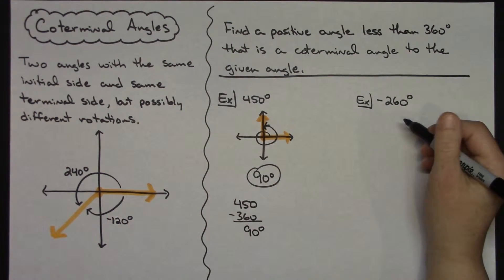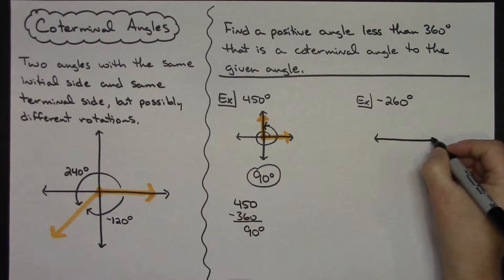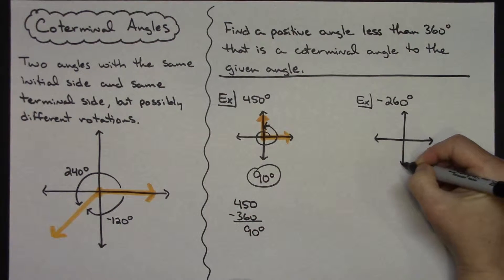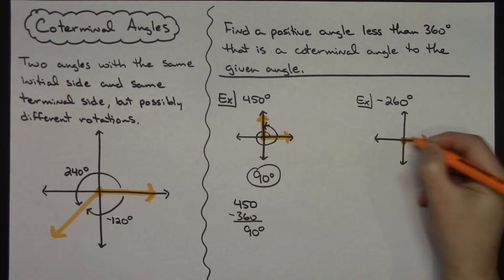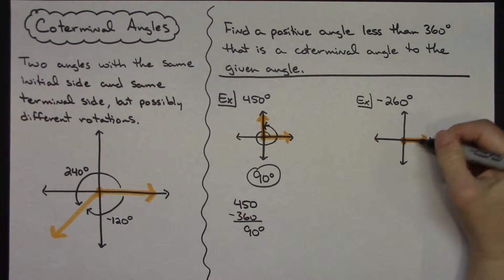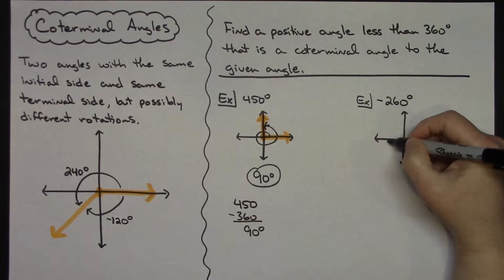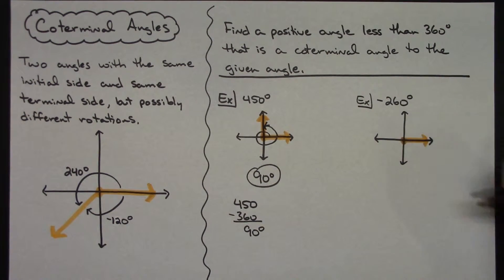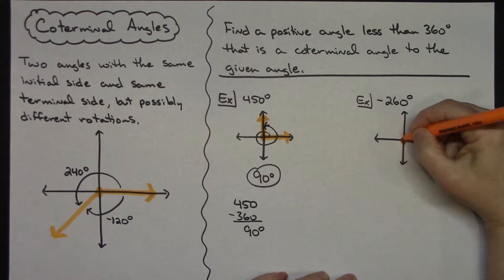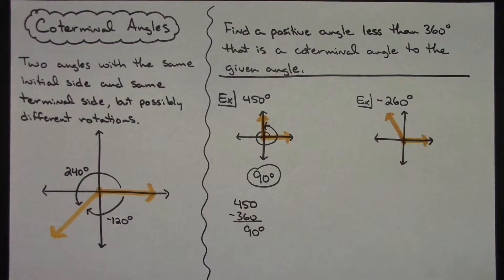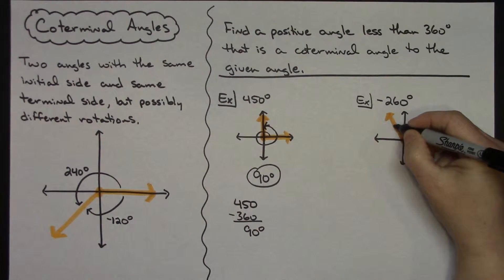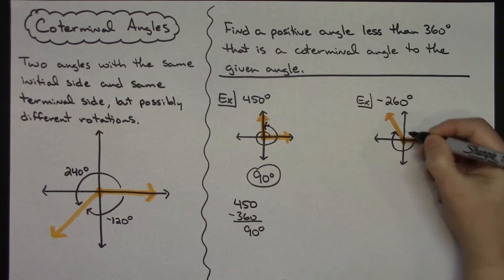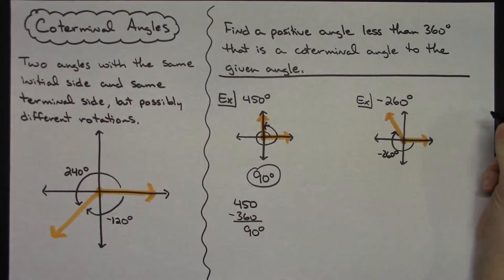Now here's a negative one. This time we're going to go clockwise around the circle. Let's visualize this one as well first. If I start on the x-axis, that's my initial side. Negative 260 means I'm going clockwise — here would be 90, 180, 270 — so it's going to be roughly up there somewhere. So there is my negative 260 degrees.